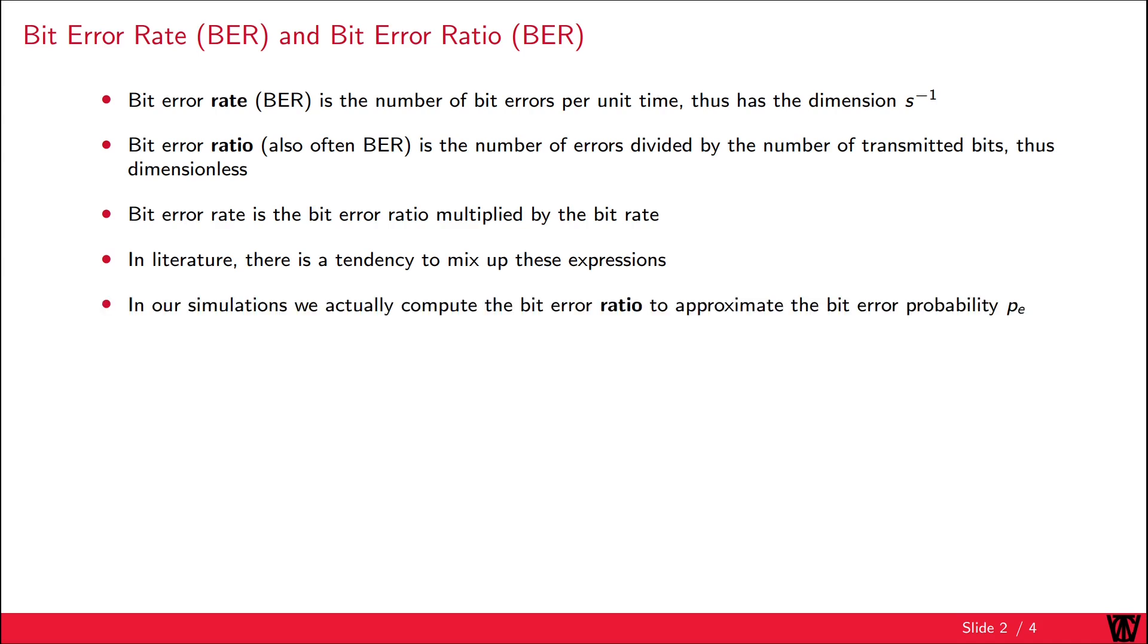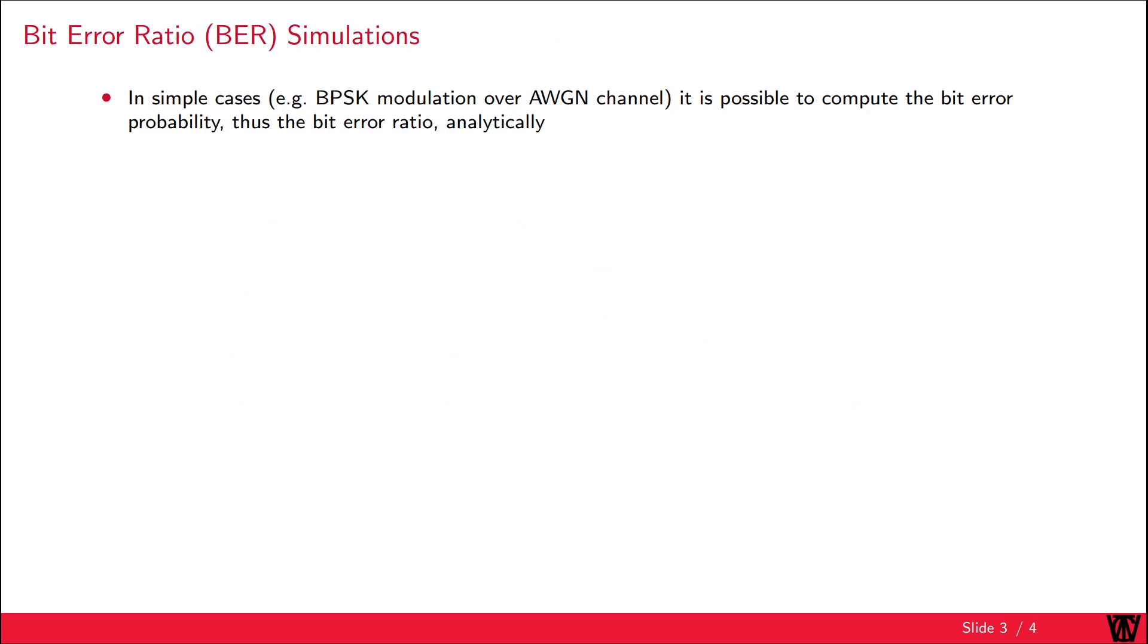In our simulations, we actually simulate the bit error ratio to approximate the bit error probability pb. The bit error probability pb is the expected value of the bit error ratio. When infinitely many bits are transmitted, the bit error ratio becomes the bit error probability. For some cases, a calculation of the bit error probability is possible.